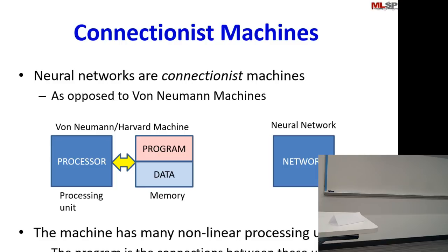How do you define the architecture of the modern computer? It's a Von Neumann architecture. What is a Von Neumann architecture? There's a processor, there's a memory, and there's an I/O device. The memory stores the programs and the data. This is what enables a single machine to perform millions of different actions — you just change the program, it does something else.